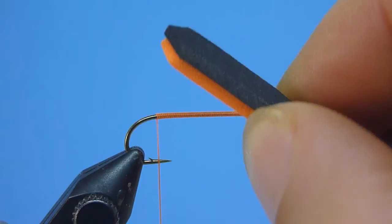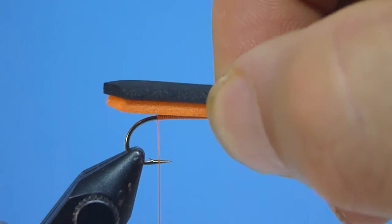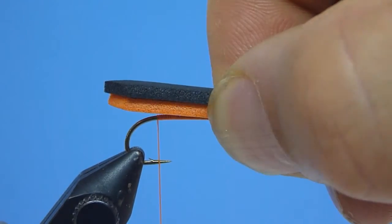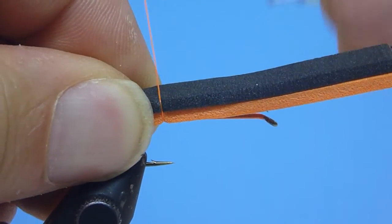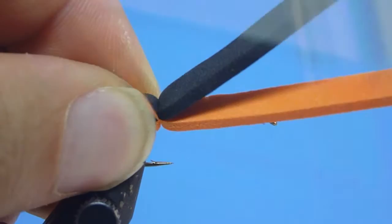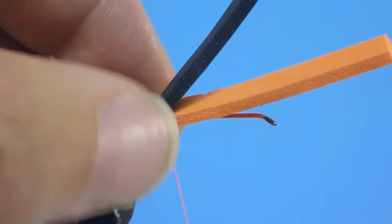With the butt end of our body now cleanly cut, and a fair amount of it left protruding rearward beyond the hook bend, we'll next go ahead and mount the foam strips neatly at the fly's rear, directly above our hook barb, using a few well-placed, tight-drawn thread wraps made immediately atop one another.